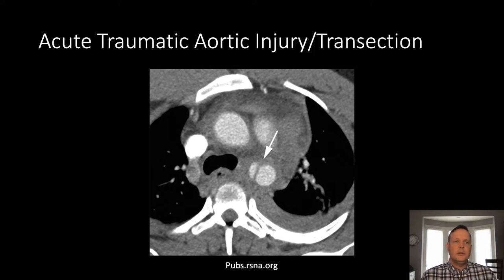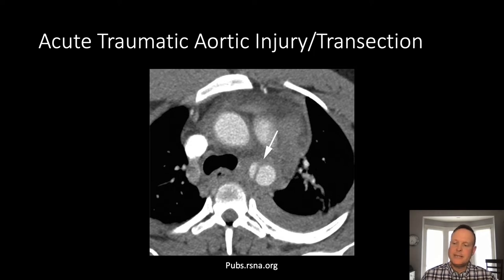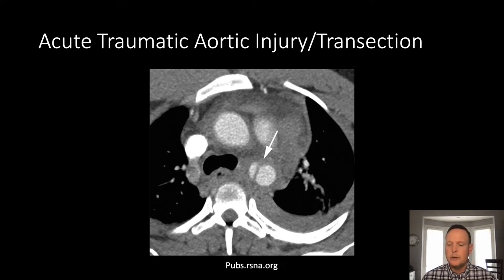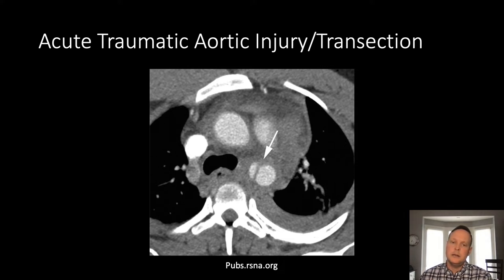This is an example of acute traumatic aortic injury. What's important to remember in the setting of trauma is that it is not the same as an evaluation for aortic dissection. Any abnormality in the wall of the aorta in the setting of trauma is concerning for acute traumatic aortic injury, which carries high morbidity and mortality and likely requires surgical treatment.